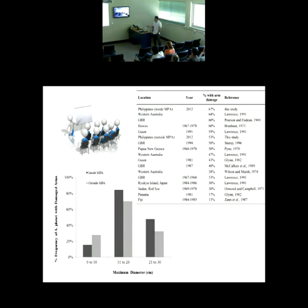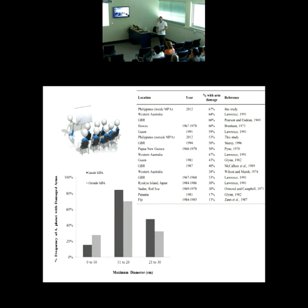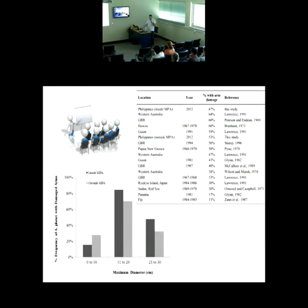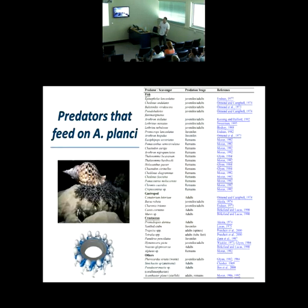Marine protected areas indirectly protect and help keep the starfish in check — if you have a lot of fish that attack and kill the starfish, you can protect the reef. This is the window of vulnerability mentioned by Moran in 1986. This is also the first study showing the highest rate of arm damage in starfish found inside the marine protected area.